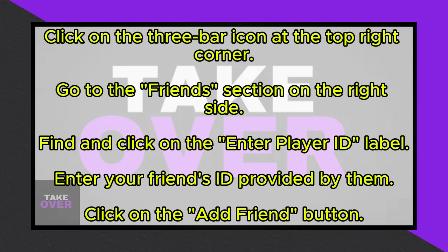You'll notice your own unique ID displayed above the text field. To add a friend, you'll need their Player ID. Ask your friend to provide you with their ID, and then enter it into the designated field.